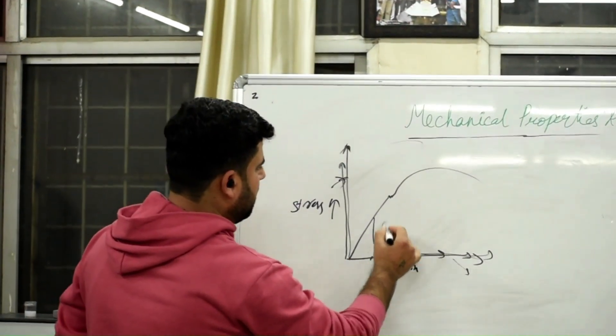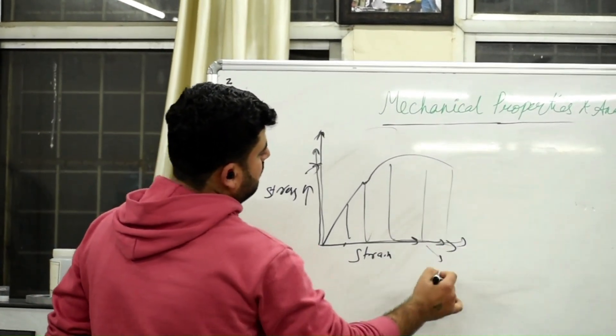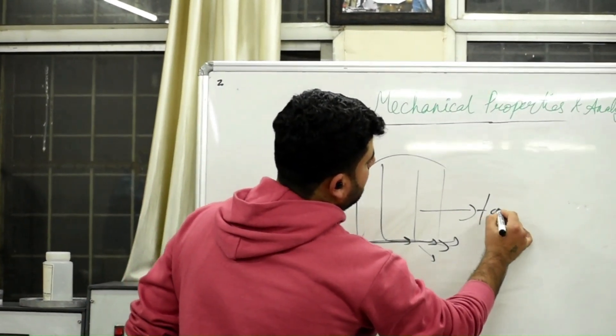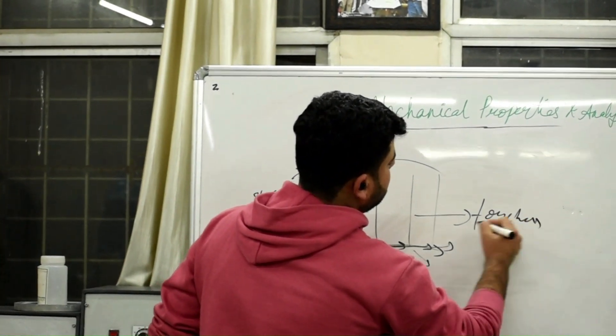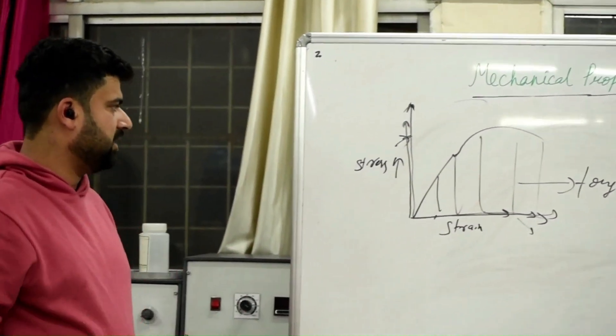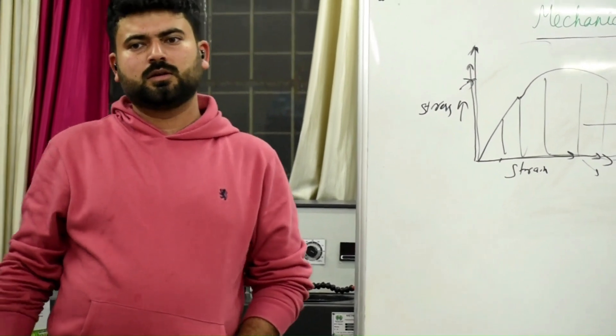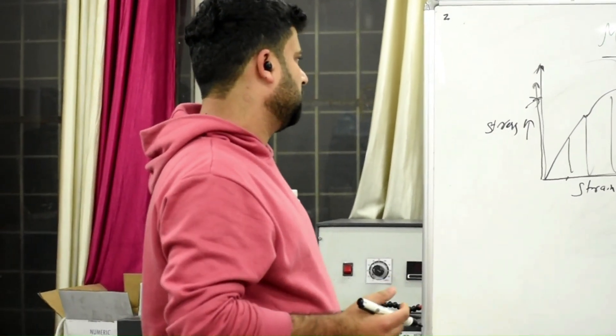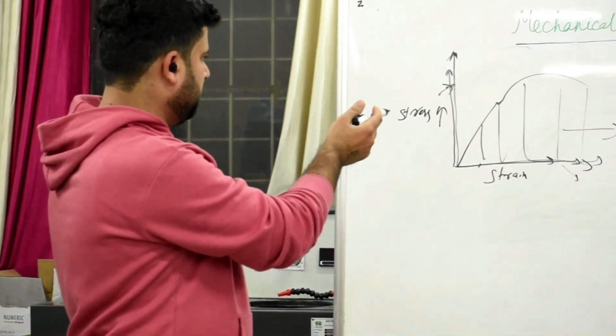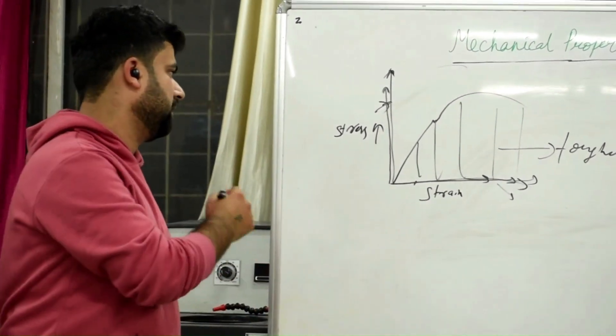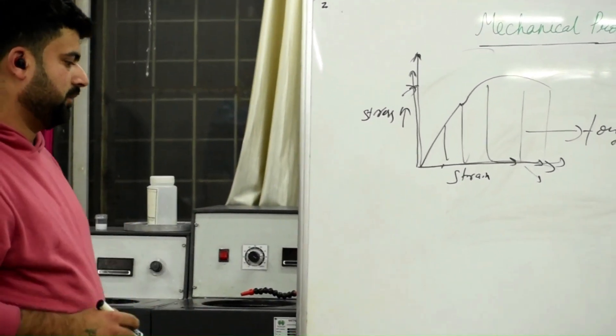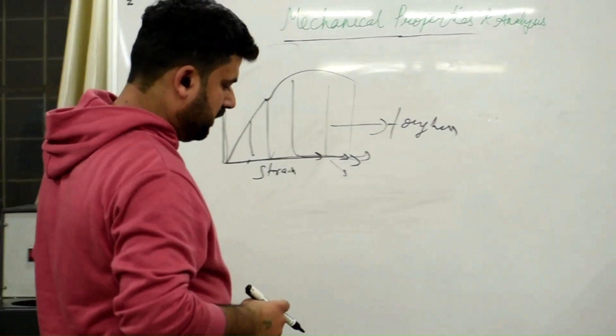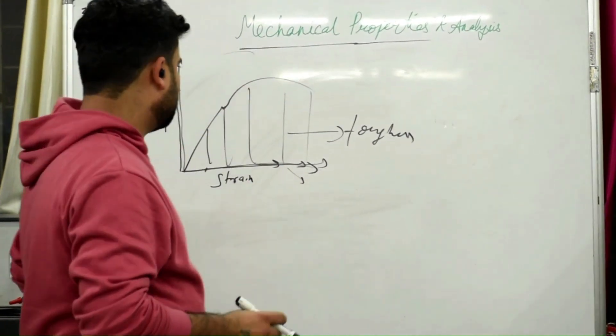Now, the area under this curve gives us the Toughness. There are several more methods which are used to determine the Toughness. Initially, we can also find it with Compression and Tensile Curve as well. We will see those methods as well.